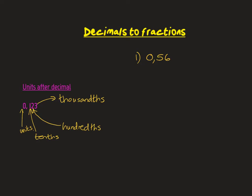When changing from decimals to fractions, it's important to look at the last decimal digit you have. In 0,56, the 6 is in the hundredths position. That means we are going to have to work with a fraction over a hundred, so we put it as 56 over 100.